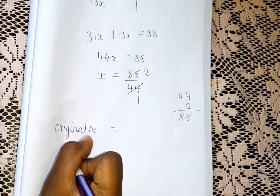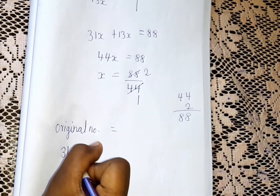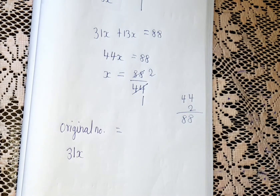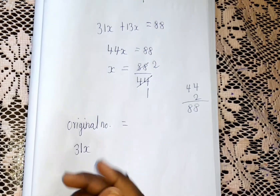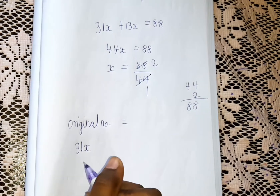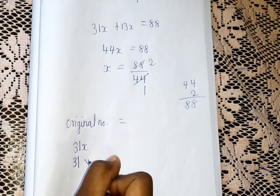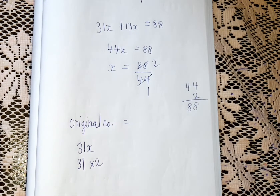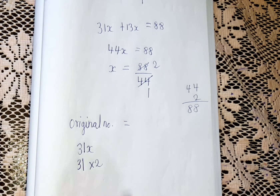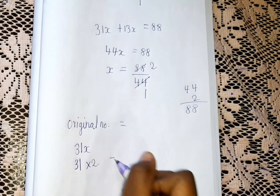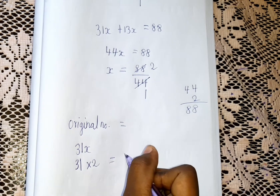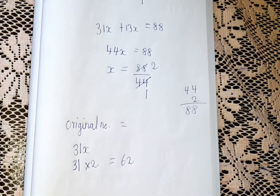The original number is equal to 31x. We found that x equals 2, so the original number is 31 into 2, which gives us 62. So our original number is 62.